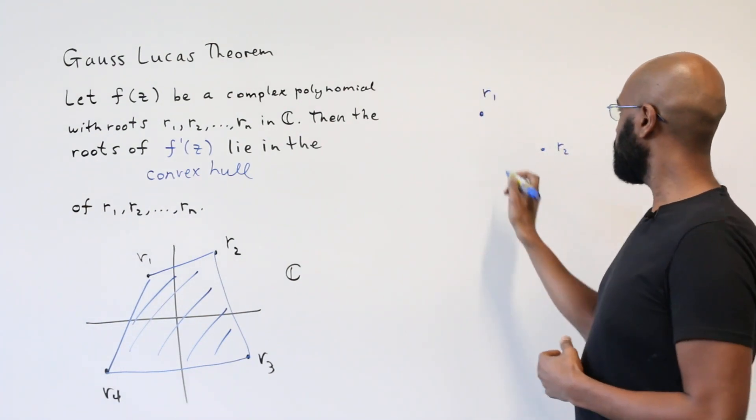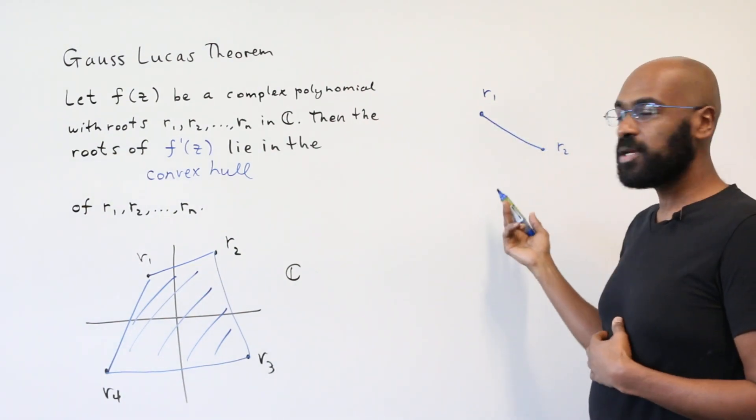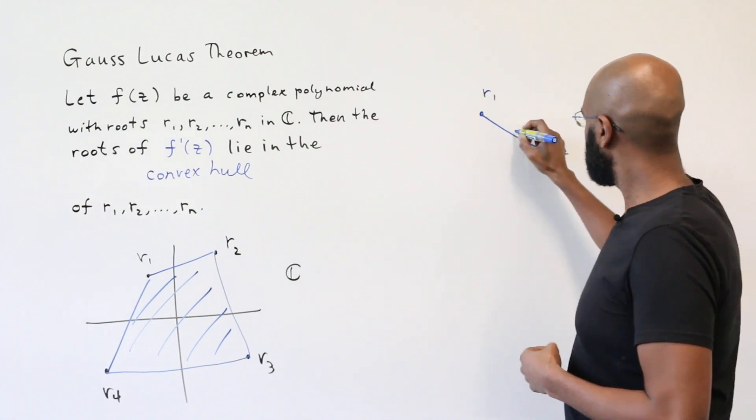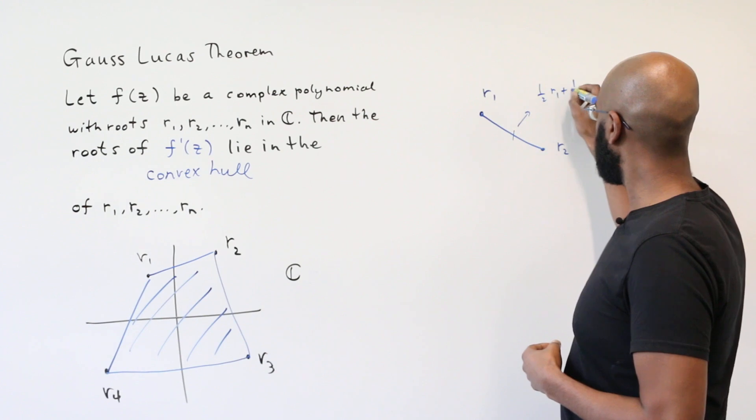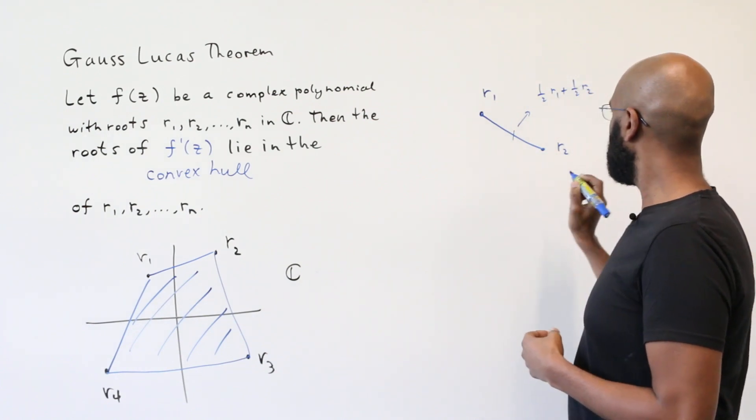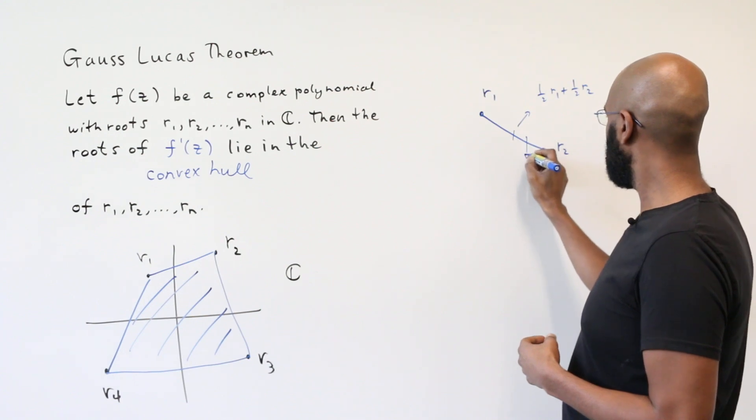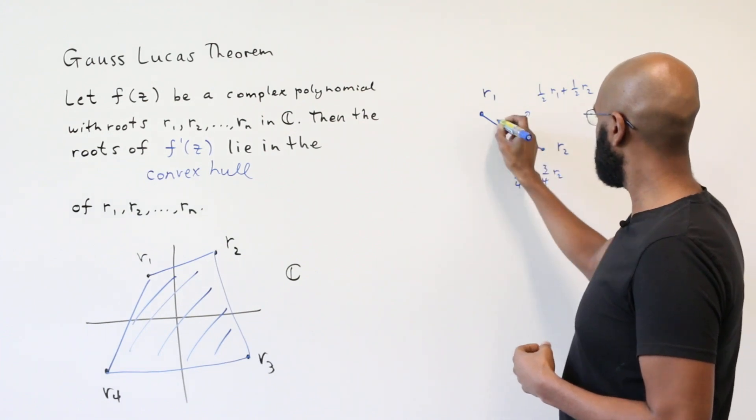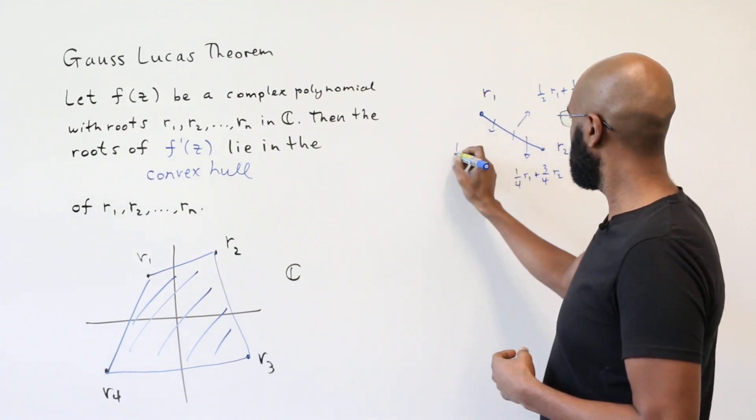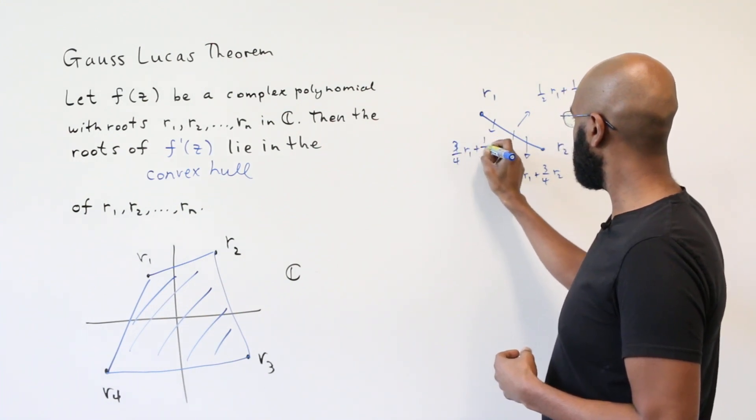The convex hull of these points is the line segment that has these points as endpoints. So what are the points on here and how can we describe them? There's the midpoint, which is half r1 plus half r2. Then there's the midpoint of this and r2, which is the average of those two, and that's a fourth of r1 plus three-fourths of r2. Similarly here we'll have the point three-fourths r1 plus a fourth r2.